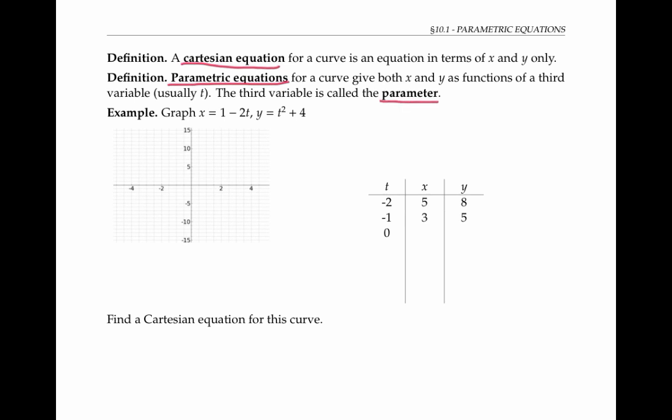As our first example, let's graph the parametric equations given here on an x, y coordinate axis. We'll do this by finding x and y coordinates that correspond to the same value of t. For example, when t is negative 2, you can calculate that x by plugging in negative 2 for t gives you 5 and y when you plug in negative 2 for t gives you 8. Please pause the video for a moment and fill in some additional values of x and y for some additional values of t.